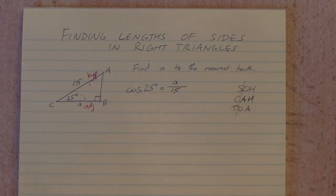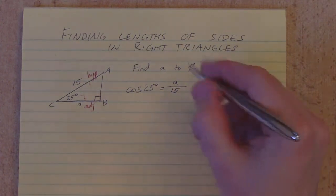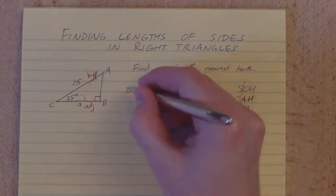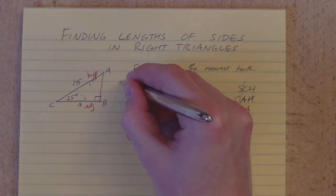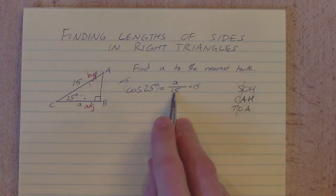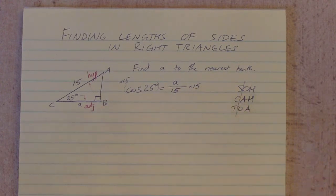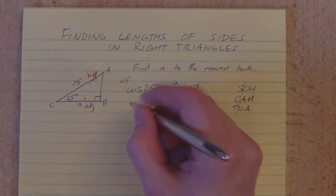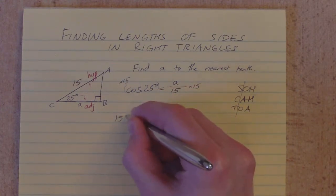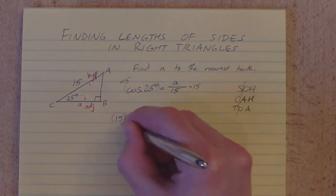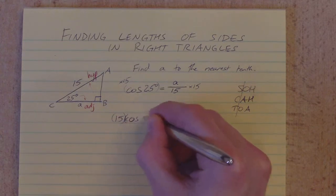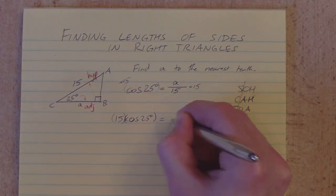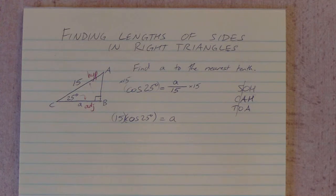It's got 15 in the denominator here. I need to get the A by itself. I'm going to multiply both sides of this equation by 15. That's going to cancel out what I've got there in the denominator to get rid of that division. So I'm going to be left with 15 times the cosine, so I'm going to open brackets here.